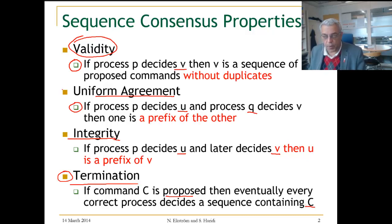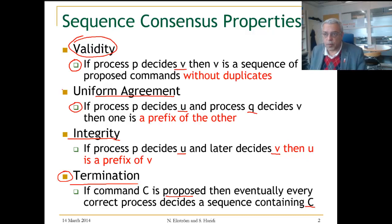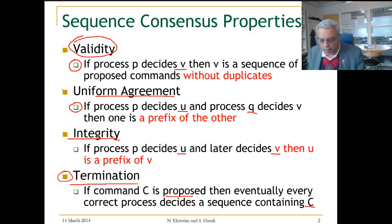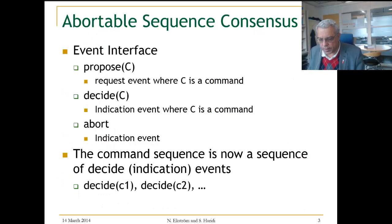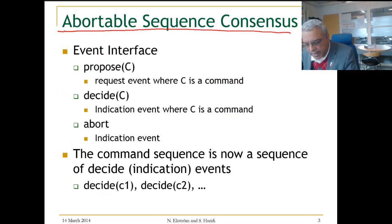And in abortable sequence consensus, if a command is proposed, then eventually every correct process decides on a sequence containing that command C — that is termination. We have shown before how to implement sequence consensus efficiently; it is sequence Paxos. What we did is an abortable sequence Paxos implementation, an algorithm that will terminate if a leader can be chosen to propose and decide; otherwise it is possible that the algorithm will not terminate.